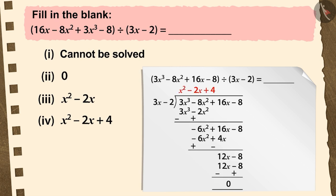By performing this, we get the quotient x squared minus 2x plus 4. Therefore, option 4 is the correct answer to fill in the blank.